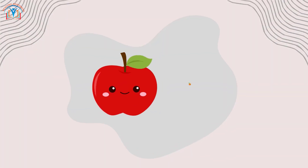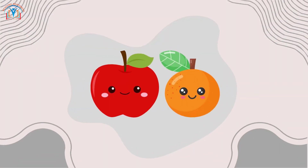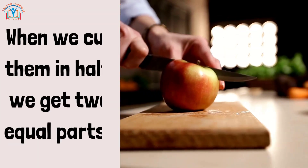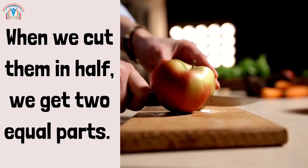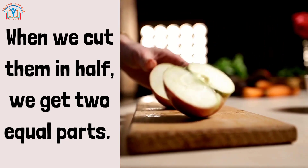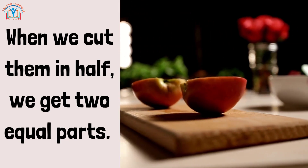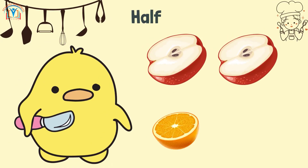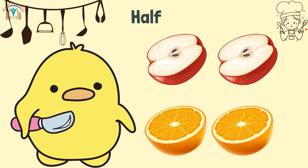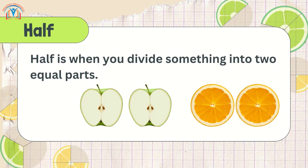Imagine you have a delicious orange and a juicy apple. When we cut them in half, we get two equal parts. Each part is called a half, so a half is something you divide into two equal parts.